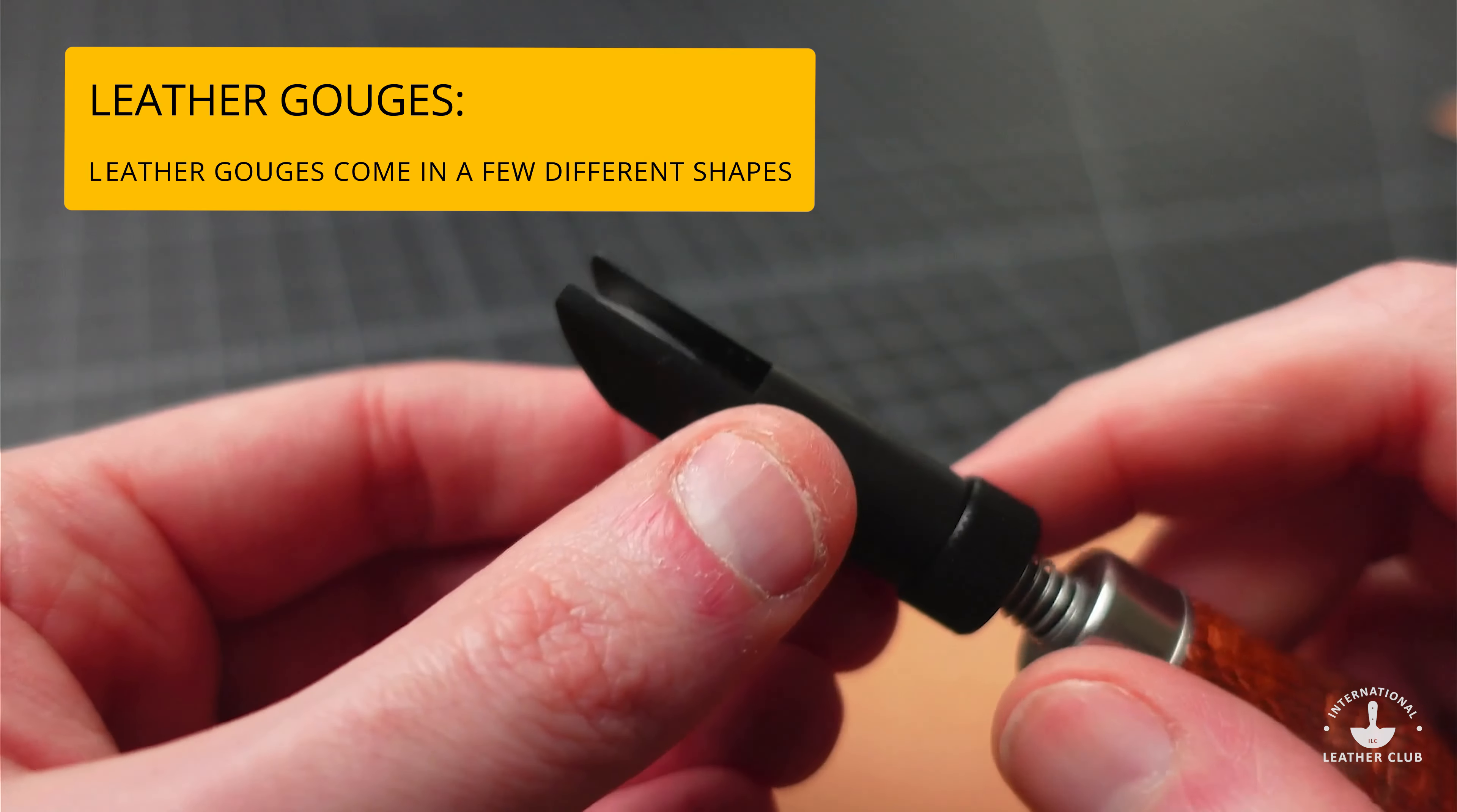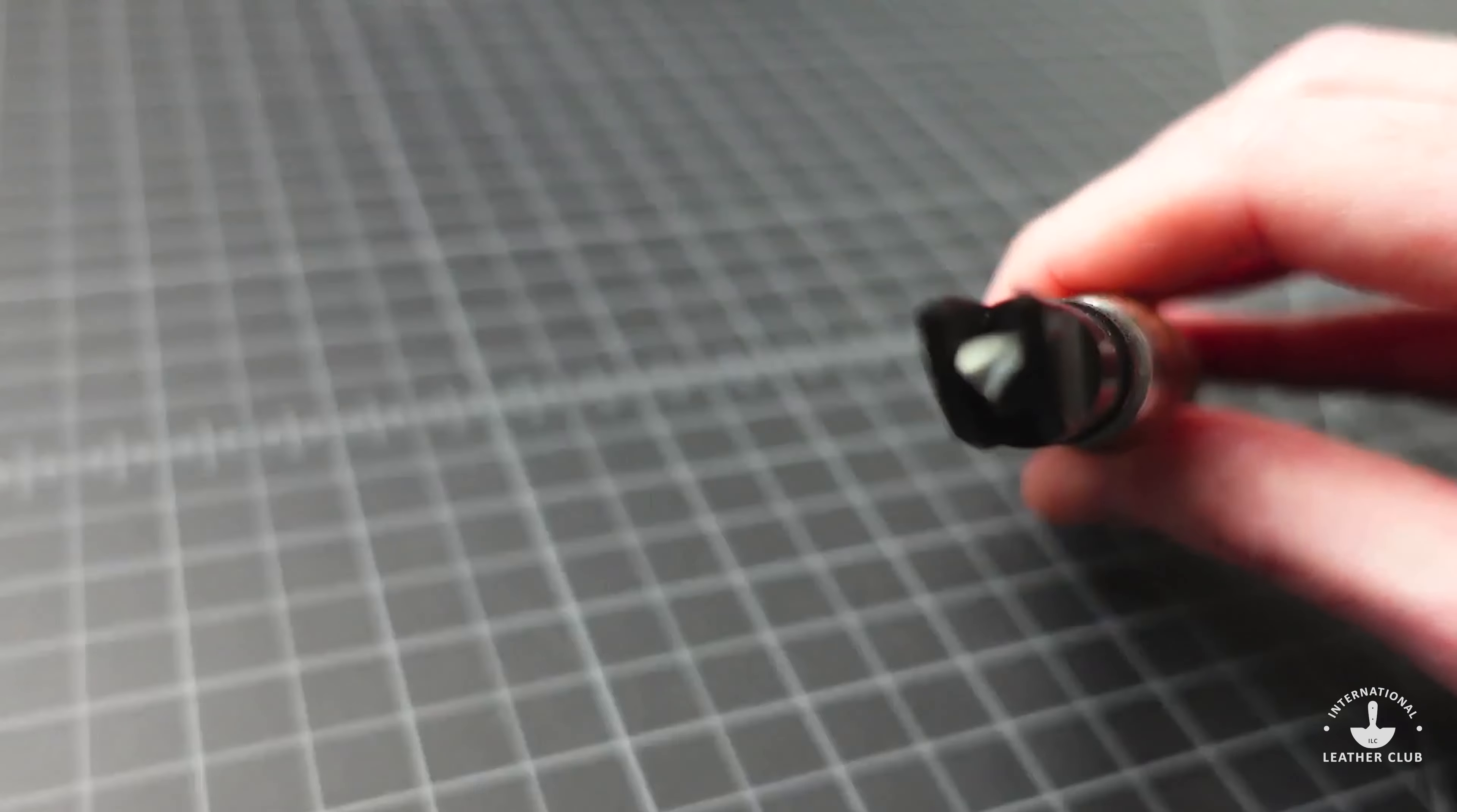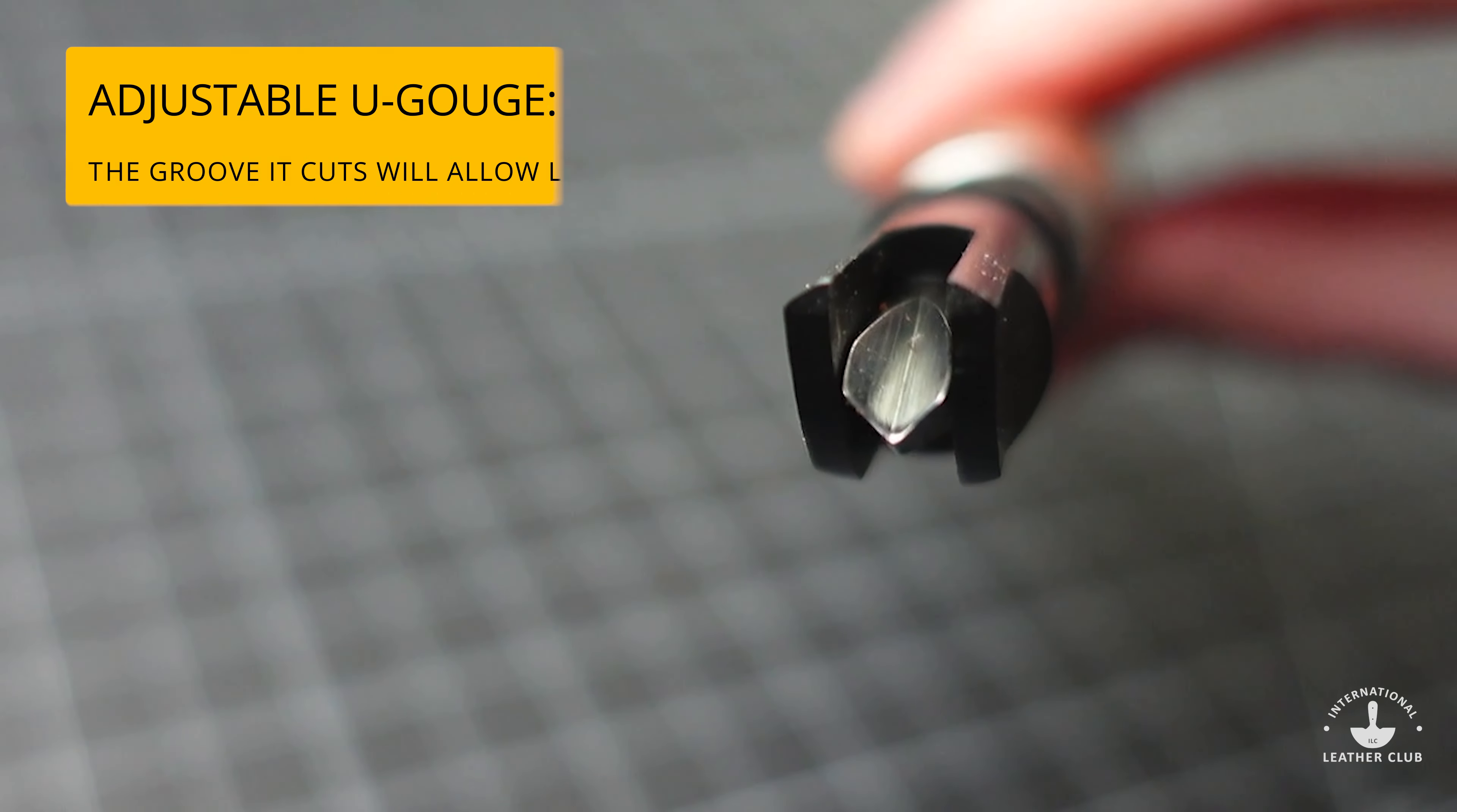If we look in the tool itself, the blade is a V-shape if you look right here, and that'll give you more of a V-shaped groove in your leather. If you're looking for more of a rounded shape, there is also something called a U-gouge. While this is a V-gouge, the U-gouge has more of a U-shape.